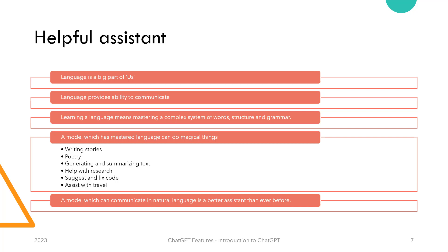A model which has mastered language can do magical things like writing stories, coming up with poetry, translation, summarizing and generating text, helping you with research, suggesting and fixing code in case you are a programmer, assisting with your travel, and a lot of other exciting things. In short, it is a better assisting technology than any before, and no wonder it caught people's imagination in a big way.